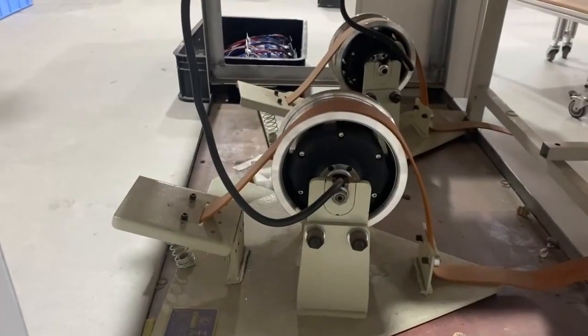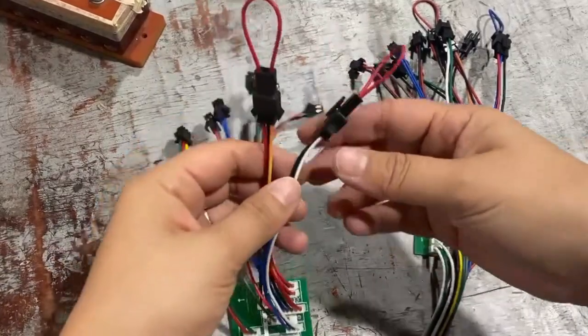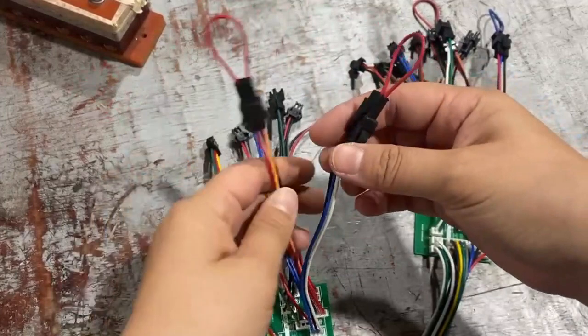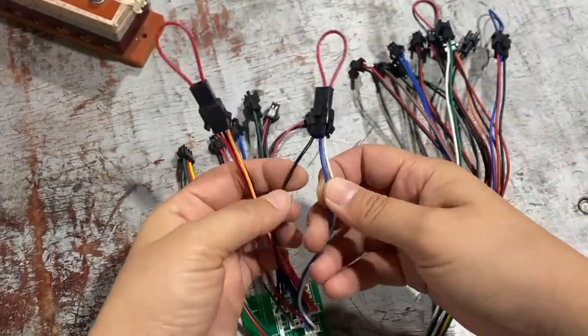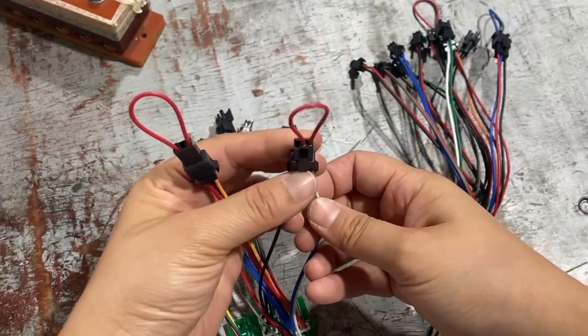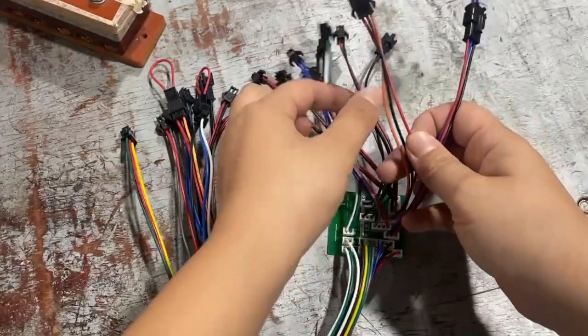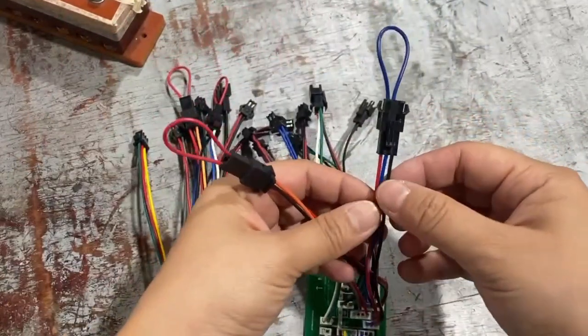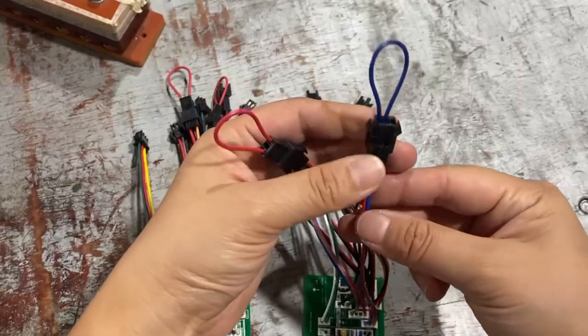The harnesses I just showed in the video are for the six-pin. We short the white and blue, but for the five-pin one, we need to short the blue and red.